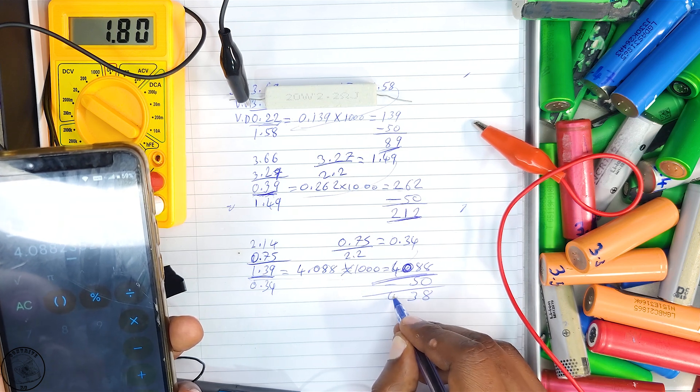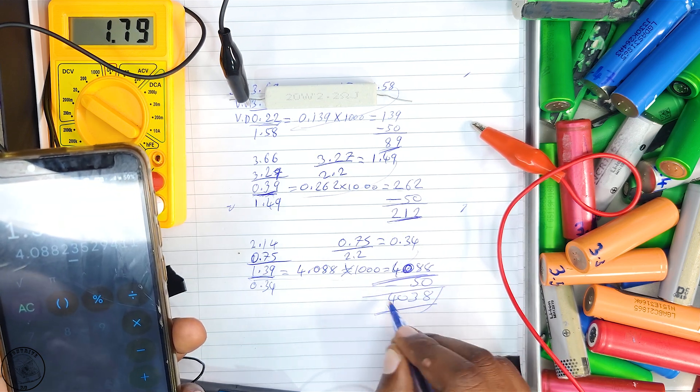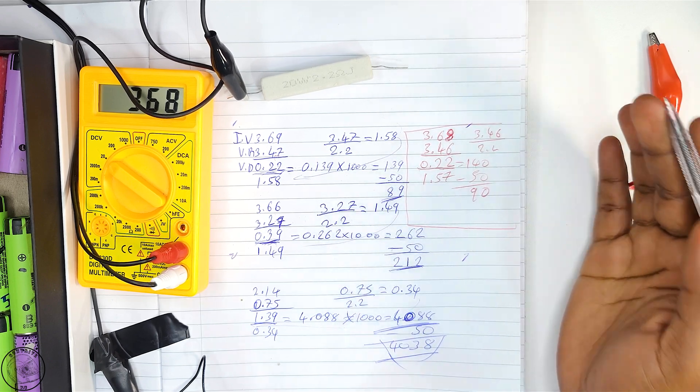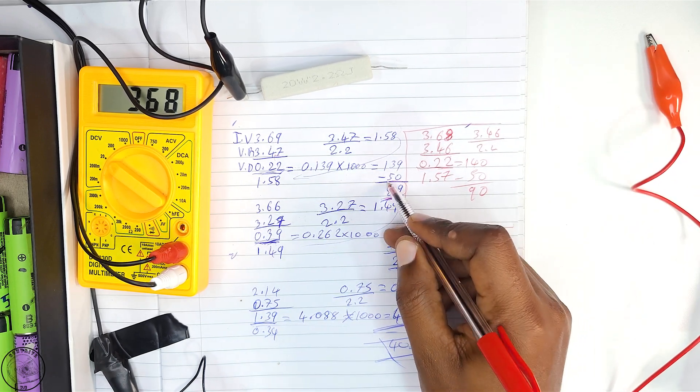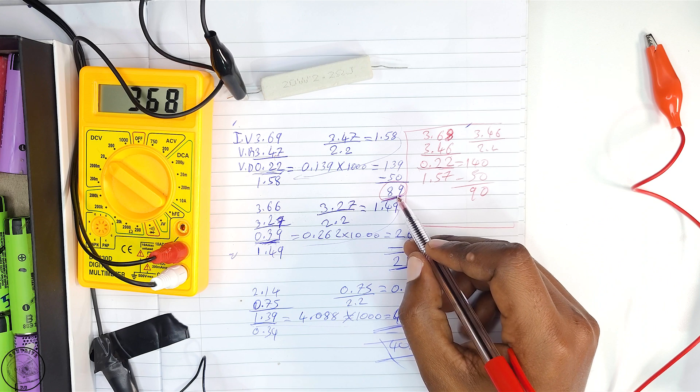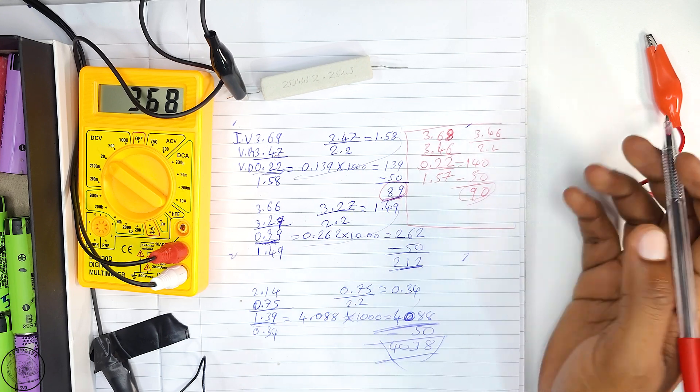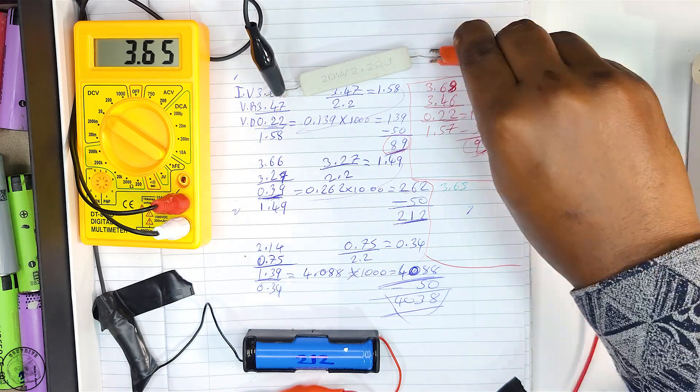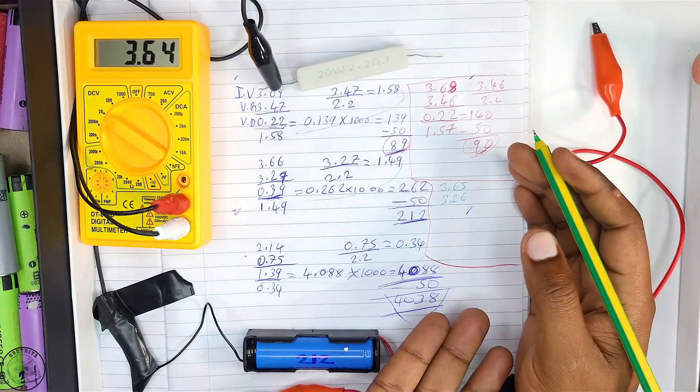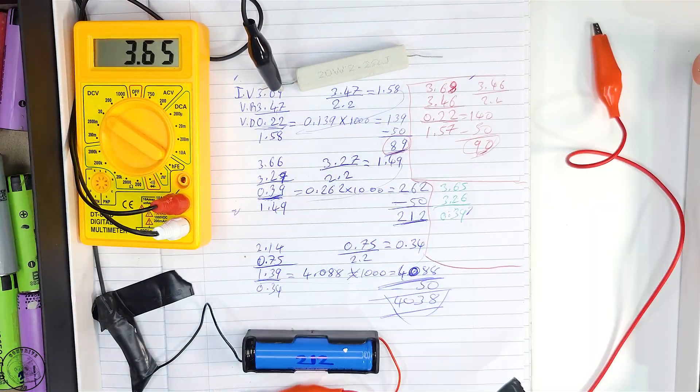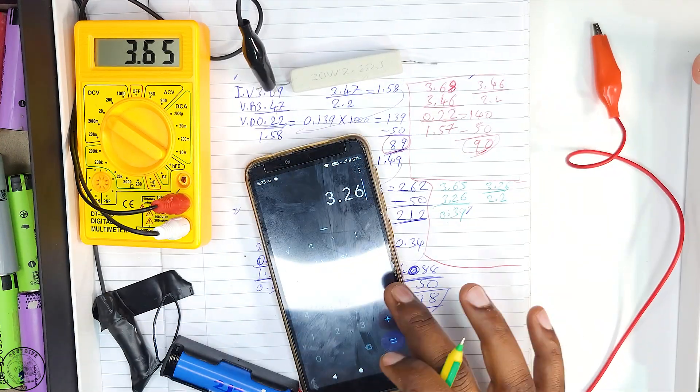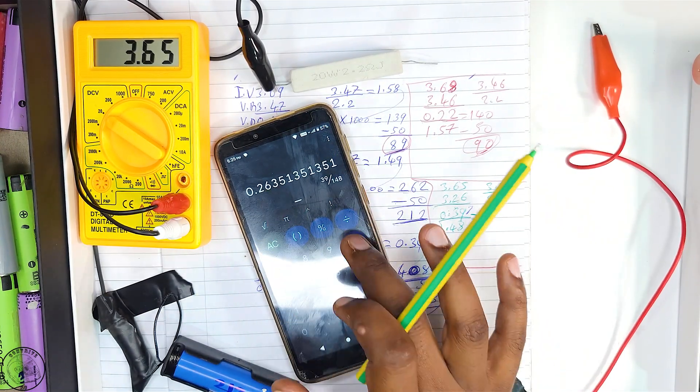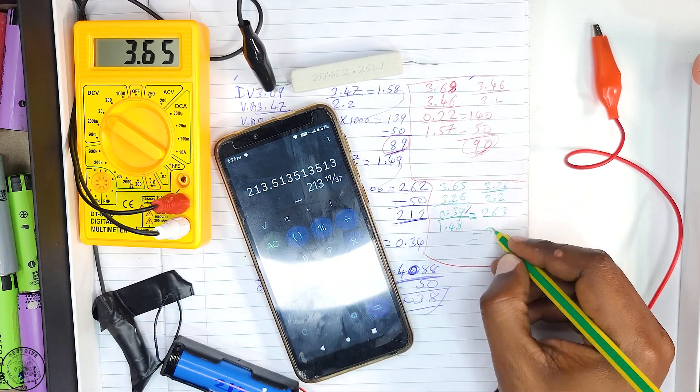For those skeptical about my methodology, I meticulously retested cells and consistently achieved comparable results. It's crucial to understand that internal resistance remains relatively stable regardless of whether the cell is fully charged or discharged, so there's no requirement to charge cells to full capacity prior to testing.